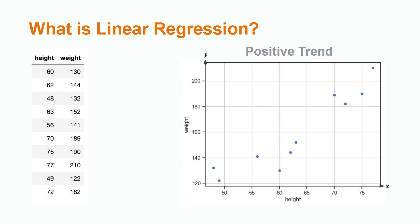This data has a positive trend, meaning that as the x value increases, the y value increases as well. We can also conclude by looking at the data, the relationship between height and weight appears to be linear.